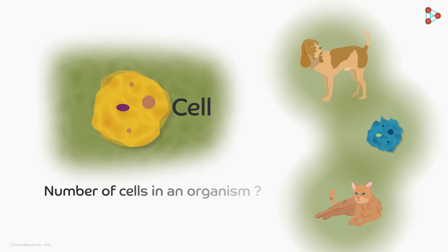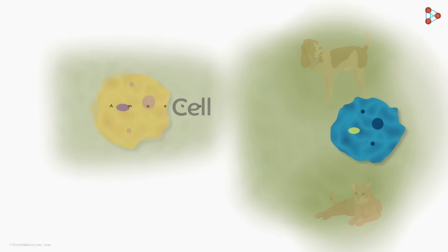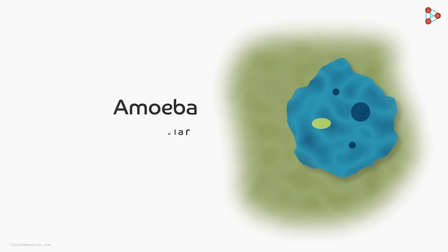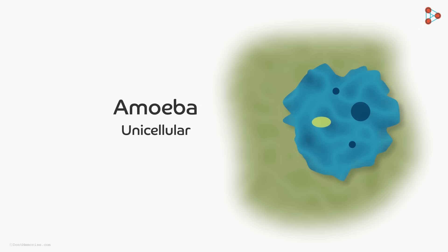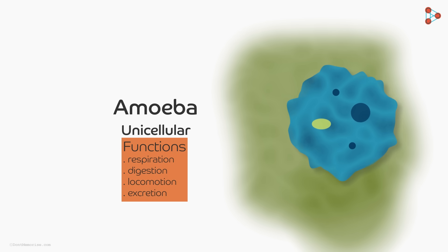How many cells do you think an organism needs to live? Well, that depends on the organism we are talking about. An organism like amoeba is made up of only a single cell. Just one single cell constitutes the body of an amoeba. This cell carries out all the functions of this organism's body.